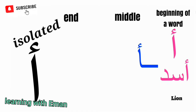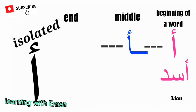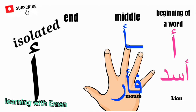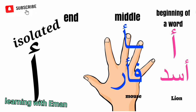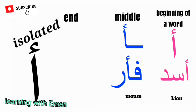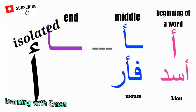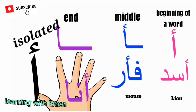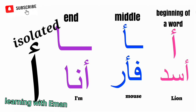In the middle position, the letter is connected from both the back and front to other letters — like 'Fa'r', which means mouth. At the end position, the letter is the last letter in a word — like 'Enna', which means 'I am'.